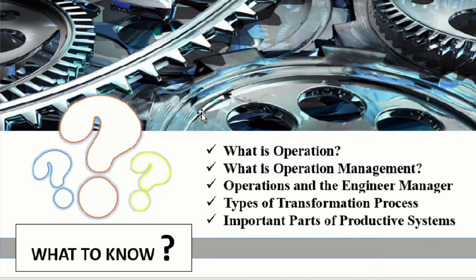To know more about this chapter, we will discuss first what is operation, second what is operation management, third is operation and the engineer manager, then types of transformation process which is manufacturing and service, and lastly the important parts of productive systems.